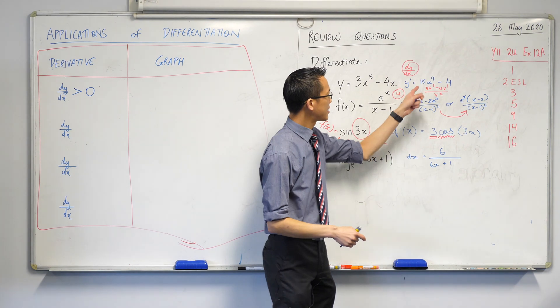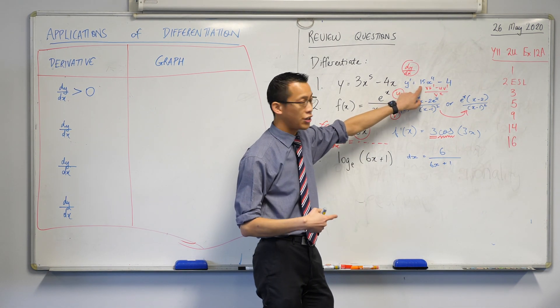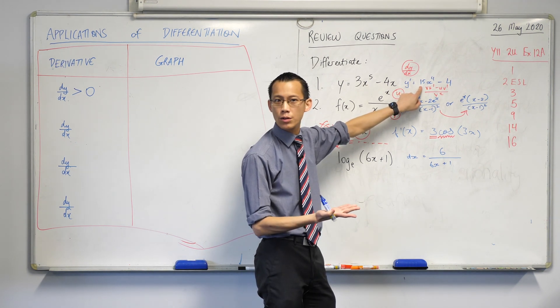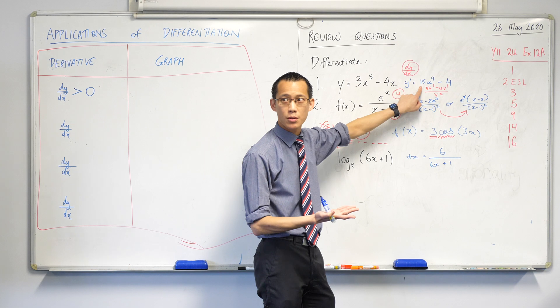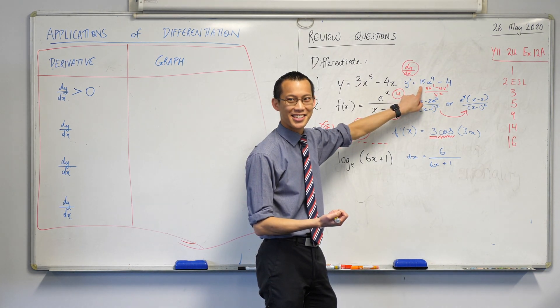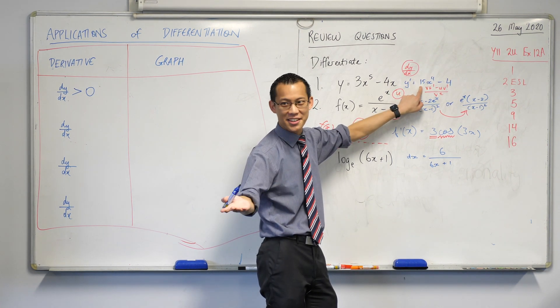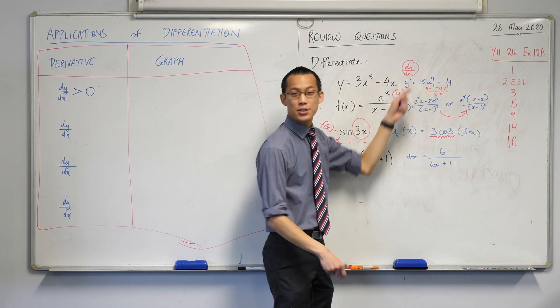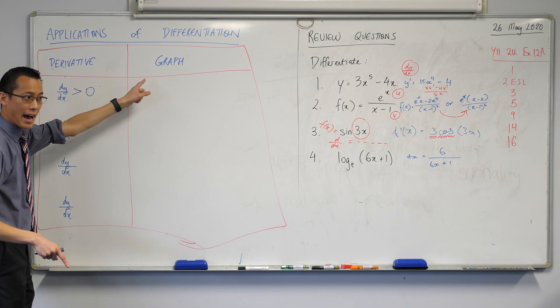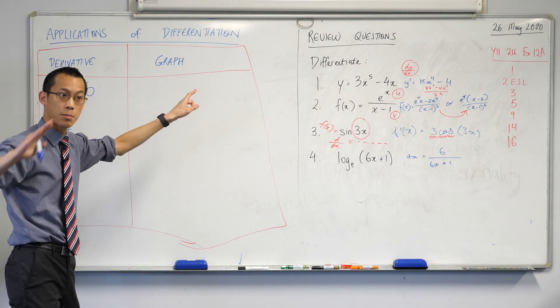If you substitute a value like if I put x equals 1 into here, what do we actually get? You get 15 times 1 take away 4, so what would your derivative be equal to at that point? We can do arithmetic. 15 times 1 take away 4, you're gonna get a value of? 11, thank you. So that's a positive value and what that tells you about the graph is its gradient is going up, it's positive.